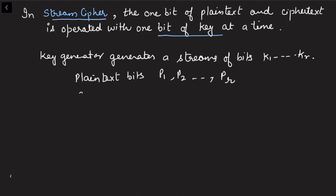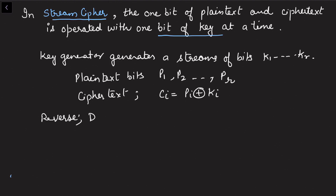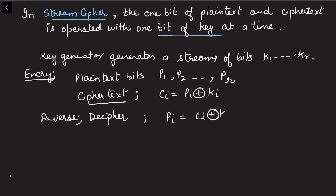For the cipher text, I'm using the notation c. We apply an XOR operation between plain text and key to get the cipher text — that is the encryption process. For deciphering, the reverse process uses the same XOR operation: cipher text is XOR'd with the key to recover the plain text.